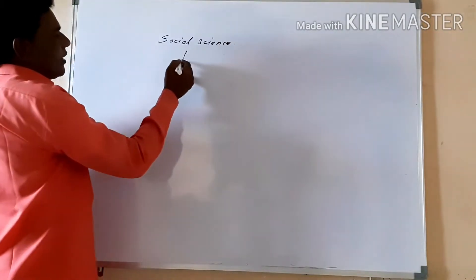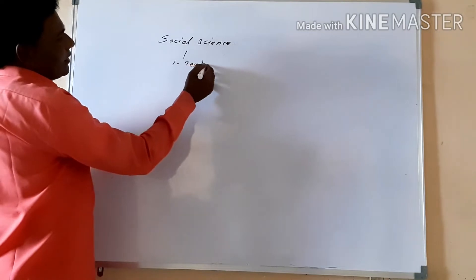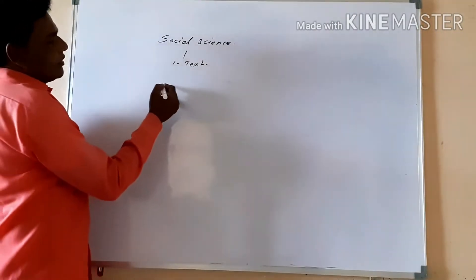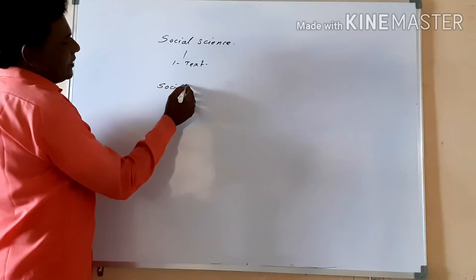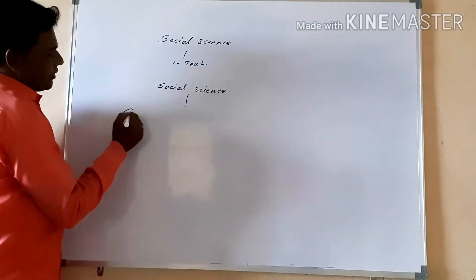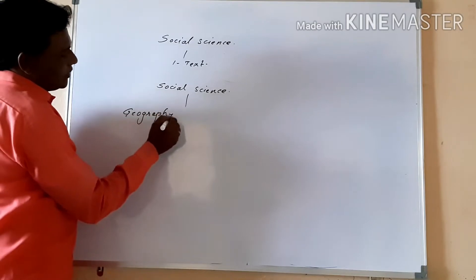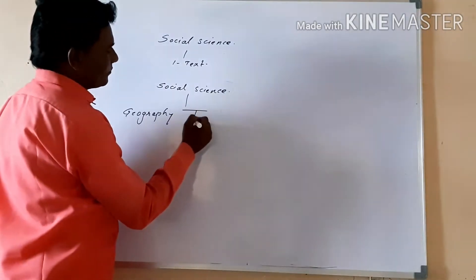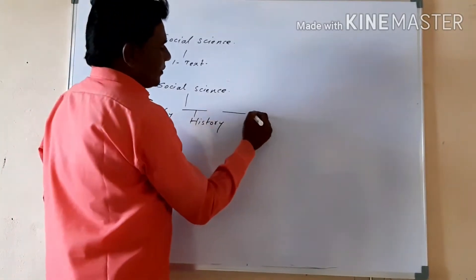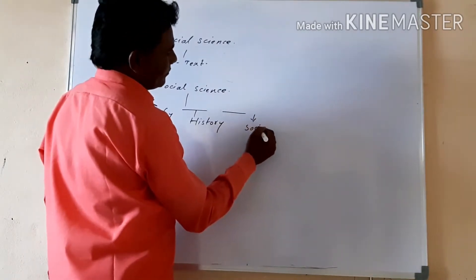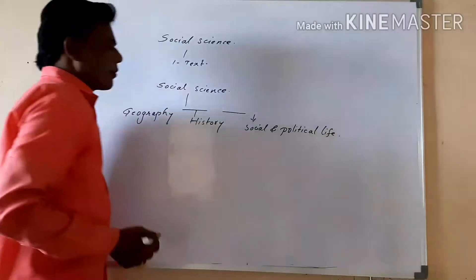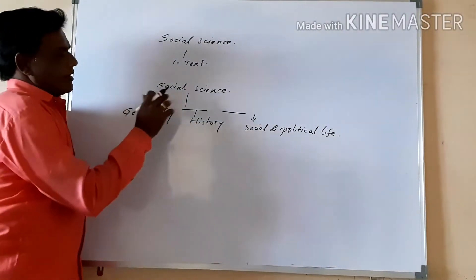Up to 5th we have only one textbook. But now in 6th standard, we have 3 types of books related to Social Science. Social Science is divided into 3 books: the first one is for Geography, the second one is History, and the third one is Social and Political Life. Now these 3 books are included in one Social Science.